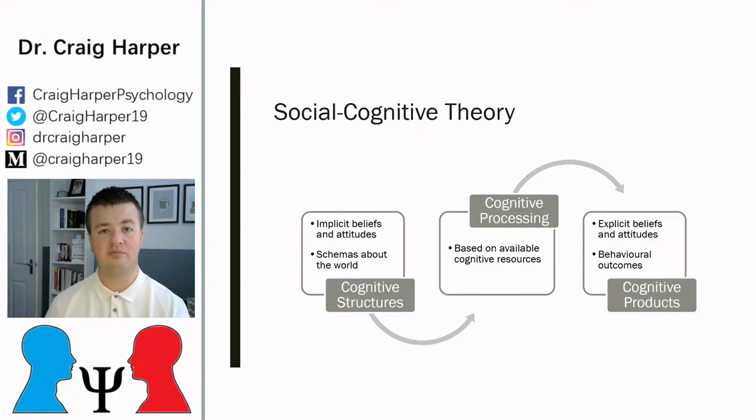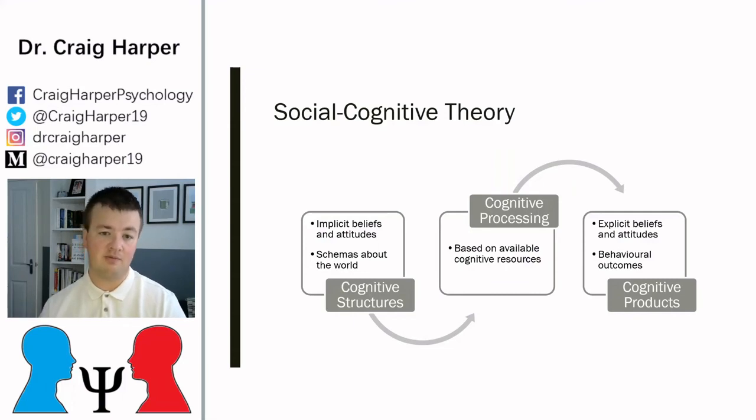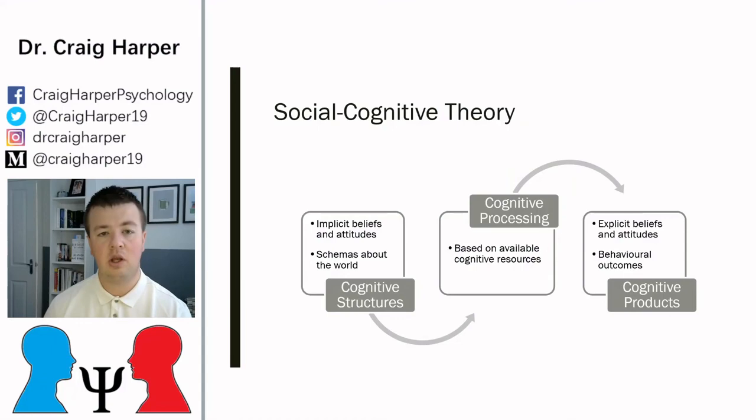As a result of cognitive processing, we have some kind of cognitive product — our explicit beliefs or our behaviors. In the next few videos, we'll be going through each of these three parts of social cognitive theory in much more detail, thinking about what they represent, what the science says, and then applying them to criminal behavior and criminal action more generally.